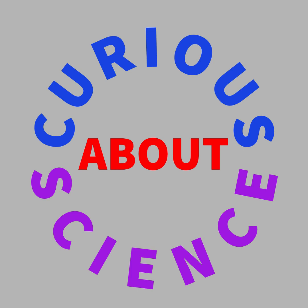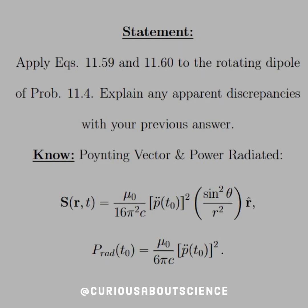We're making our way through this chapter one step at a time, but be aware we're about to get messy, so let's pay attention to the details again. Our problem is: apply equation 59 and 60 to the rotating dipole of problem 11.4. Explain any apparent discrepancies with your previous answers.